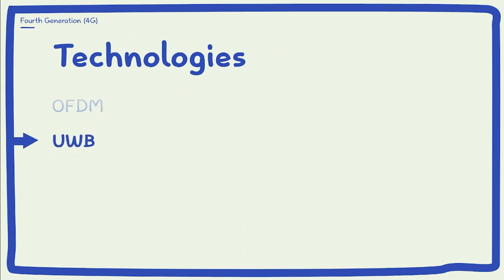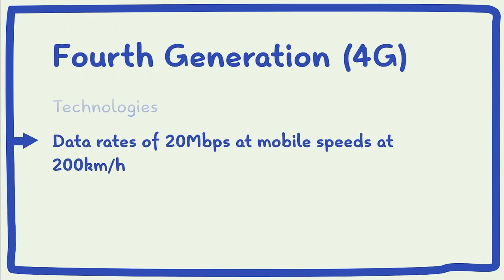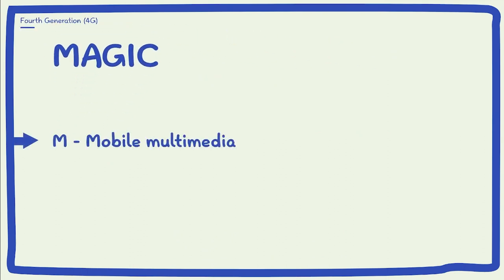They also use ultra-wide radio band (UWB) and millimeter wireless technology with data rates of 20 Mbps and mobile speed of up to 200 km per hour. 4G technology is often referred to as MAGIC, which stands for mobile multimedia, anytime, anywhere.